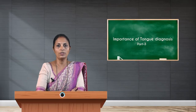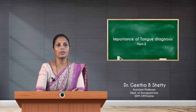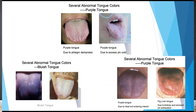Hello students, welcome to the session. We will continue with the topic of tongue diagnosis. Several abnormal tongue colors are displayed in this picture. The most common seen is purple tongue, which is due to the accumulation of phlegm and dampness. There is another picture showing a swollen purple tongue due to excess of internal cold.